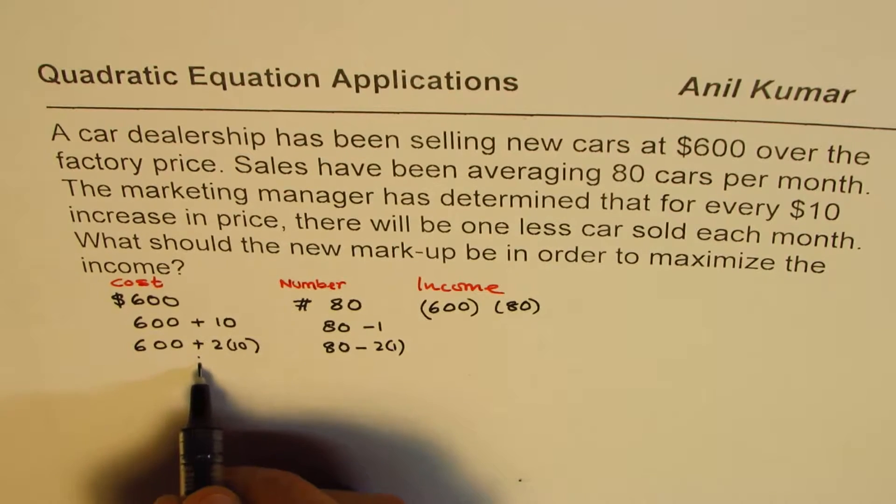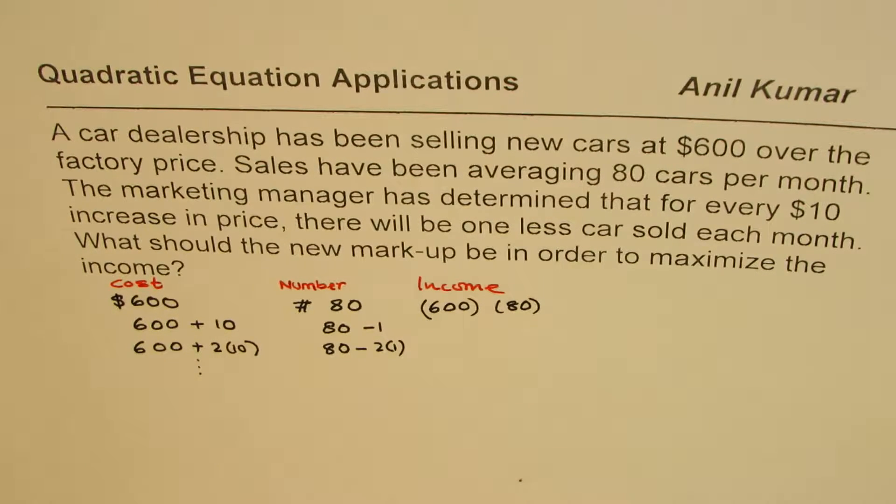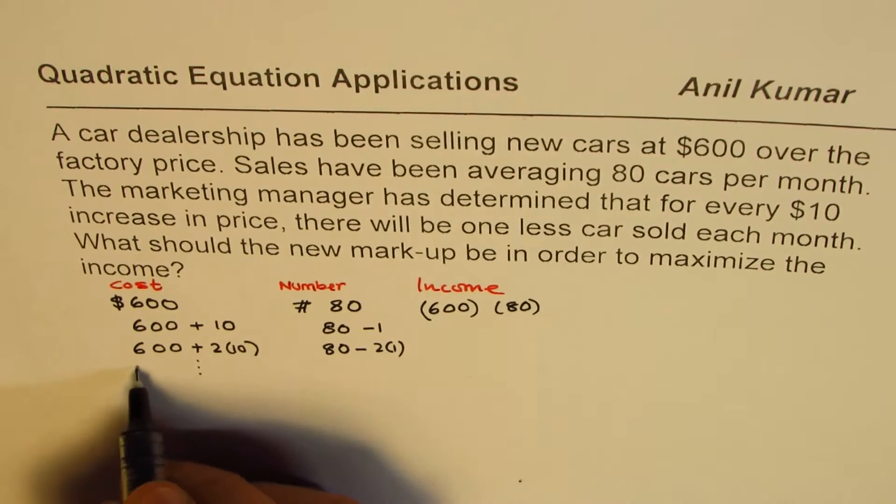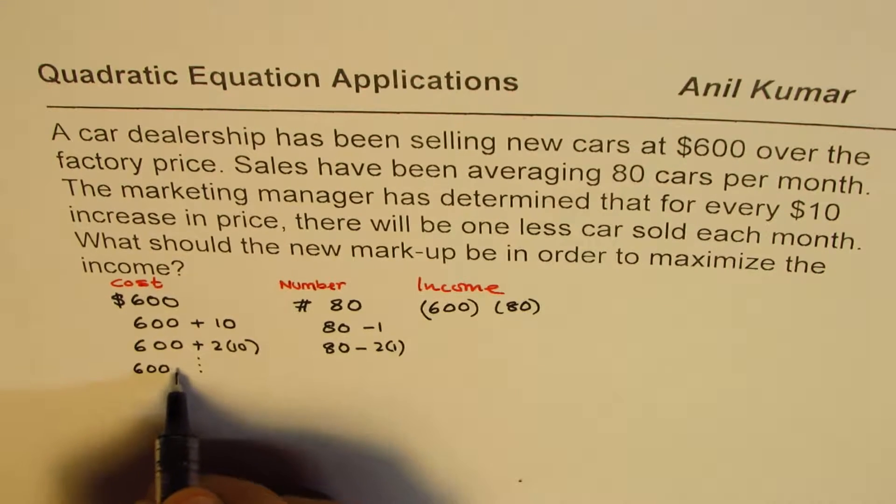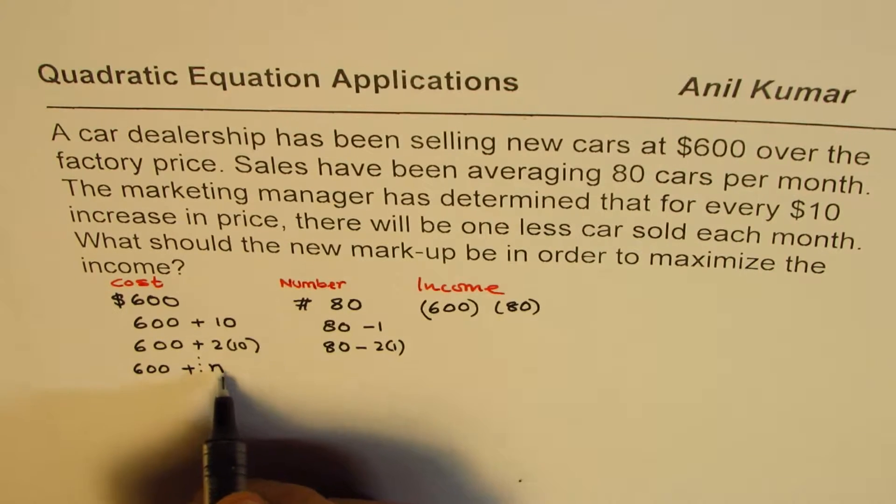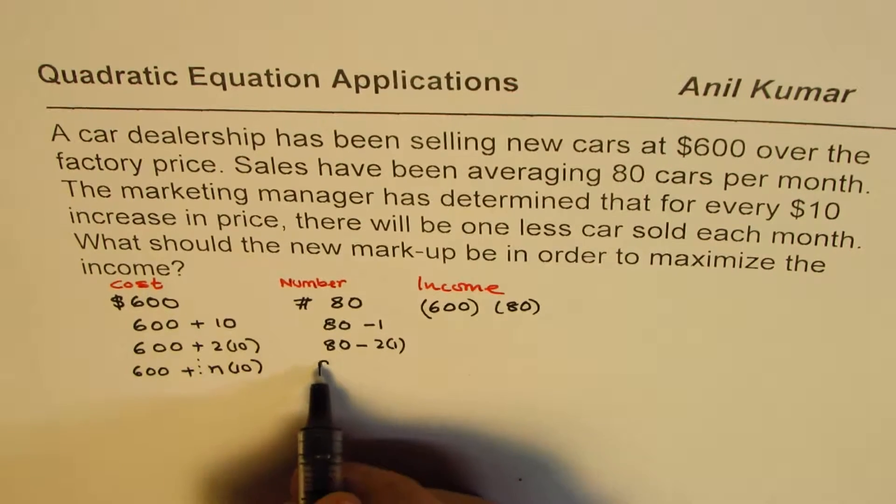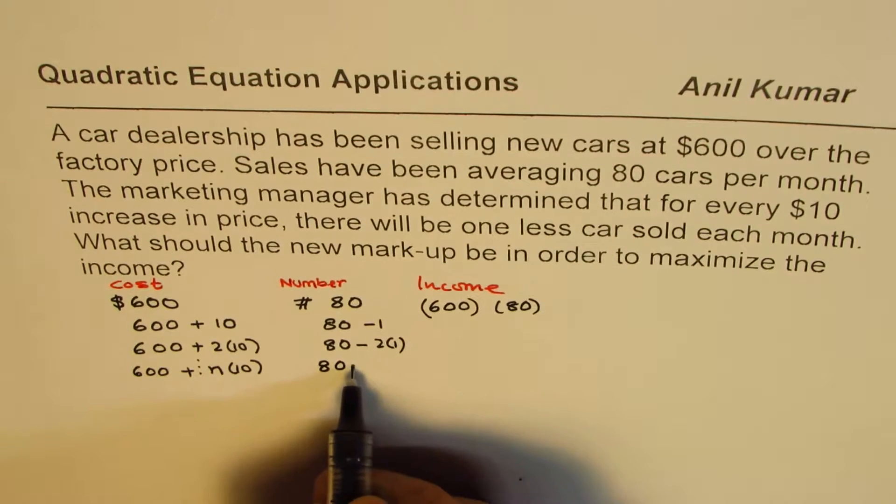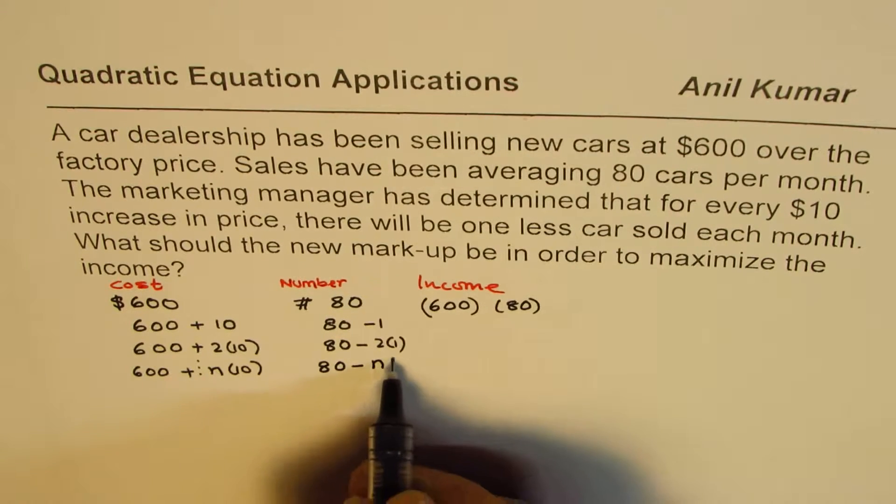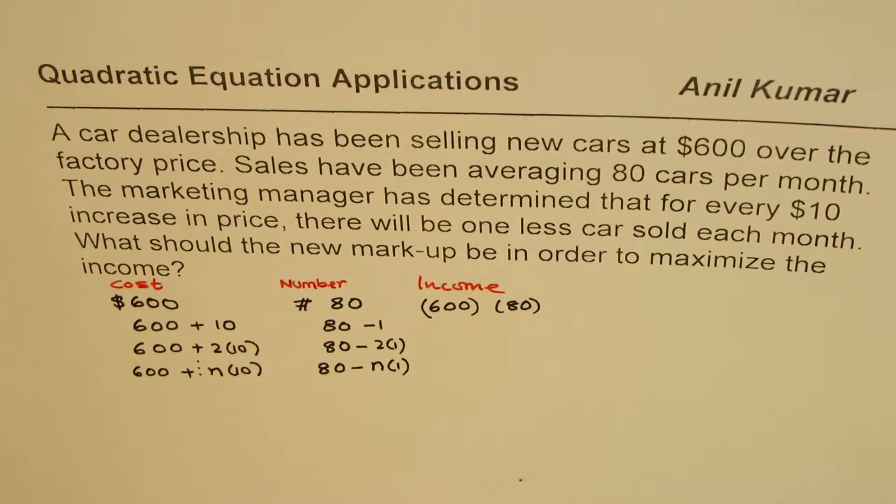And if I continue this process, we don't know how many $10 can we increase. Well, any number. So we could write this as 600 plus n times $10. In that case, the number of cars sold will be 80 minus n times one.